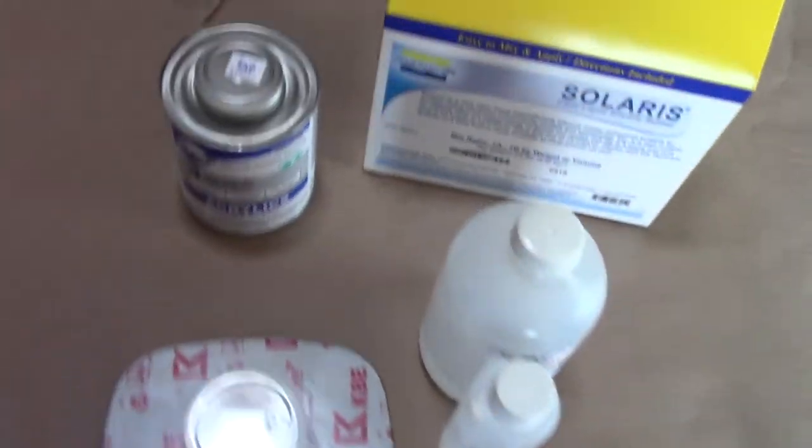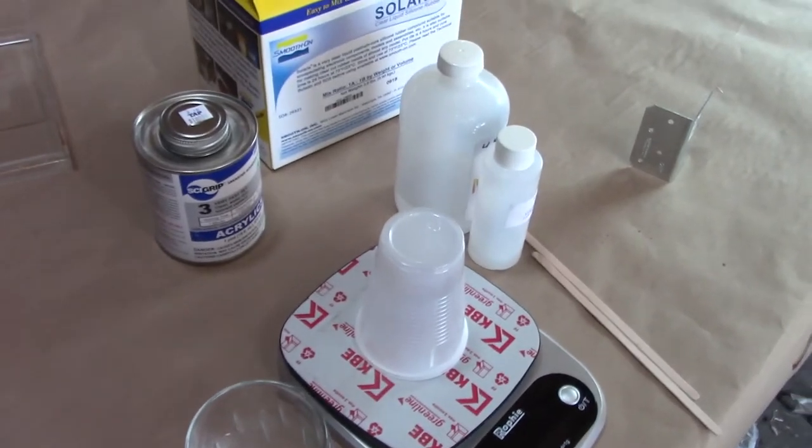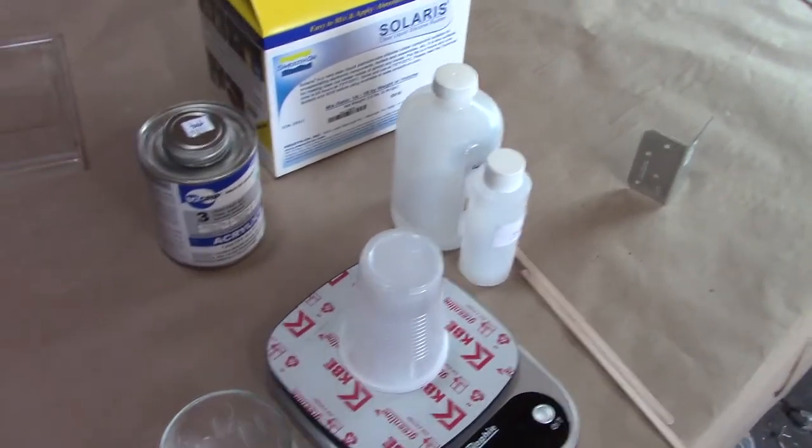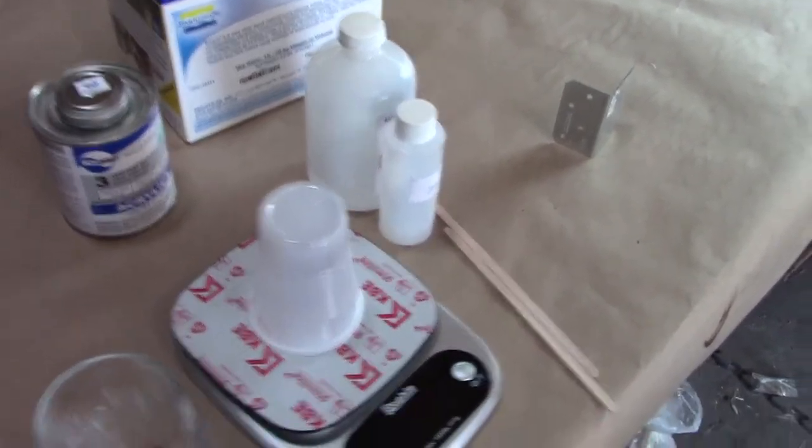Especially after sometimes they would fail after one print. I'm going to take you through all the steps on making your own homemade vat, complete with a PDMS layer that you can pour at home.